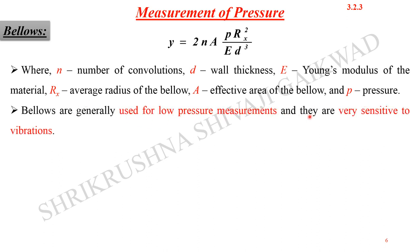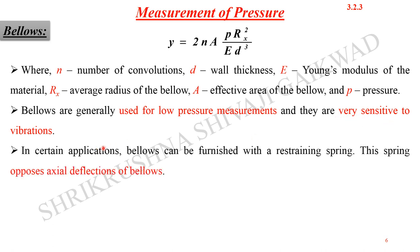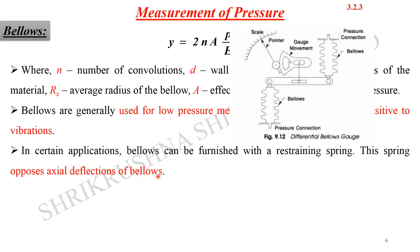Bellows are generally used for low pressure measurements and are very sensitive to vibrations. In certain applications, bellows can be furnished with a restraining spring that opposes the axial deflection of the bellows.